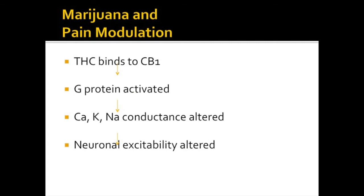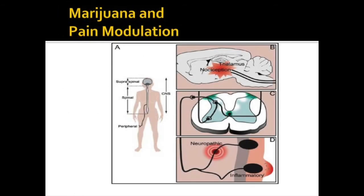Once inside our body, THC binds to CB1 receptors on the cell membrane of various neuronal cells along the pain conduction pathway. This in turn alters the conductance of calcium, potassium, and sodium channels. As a result, neuronal excitability is reduced. CB1 receptors are found in all areas of the pain conduction pathway. On the other hand, when THC binds to CB2 receptors, the release of pro-inflammatory factors by non-neuronal cells located at the nociceptor neuron terminals is inhibited, which promotes analgesia.